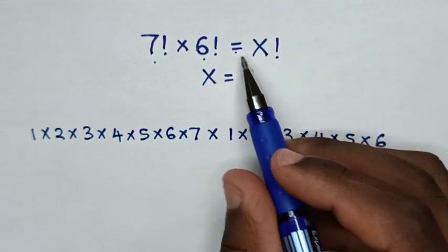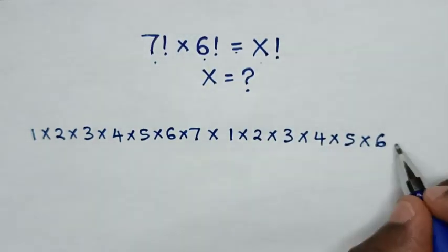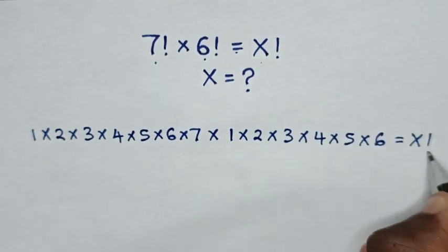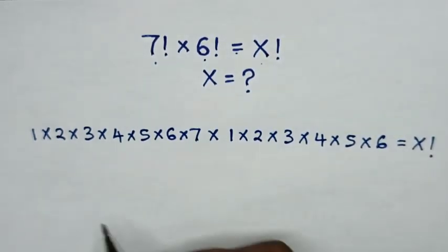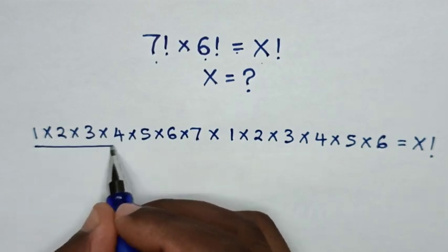Then, is equal to x factorial. Now, from here is multiplication from 1 up to 7.